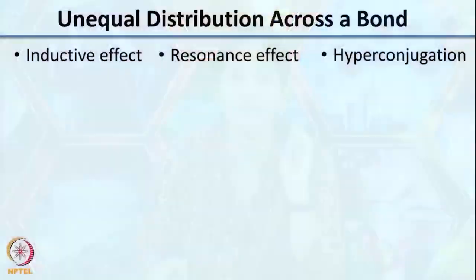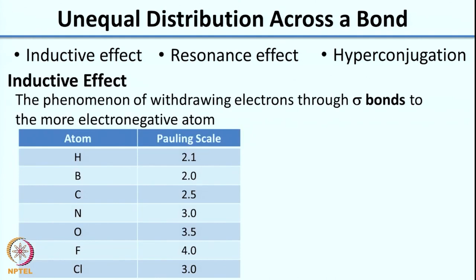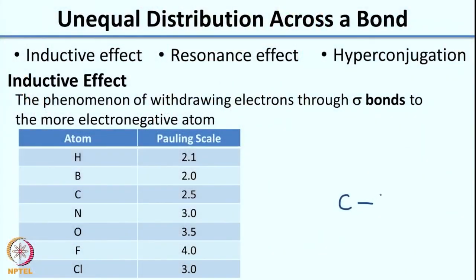There are three effects you would have come across even in your 12th standard books. The first is the inductive effect — essentially the phenomenon of withdrawing electrons through sigma bonds. A very important concept here is electronegativity. If X is an electronegative atom, it has a greater tendency to pull electrons toward itself from the bond. As it pulls electrons, you end up getting a delta negative on X and a delta positive on carbon.